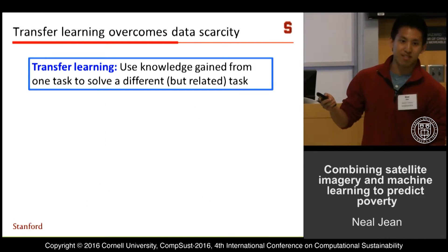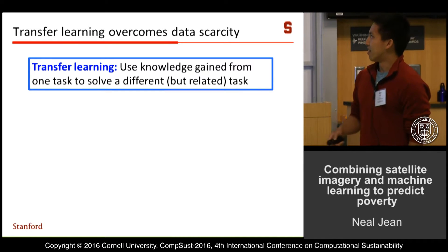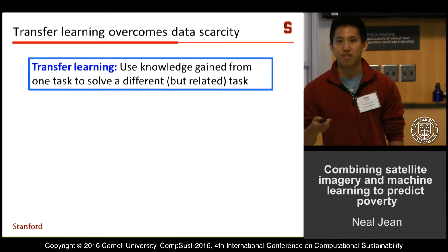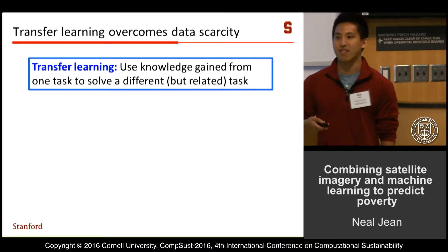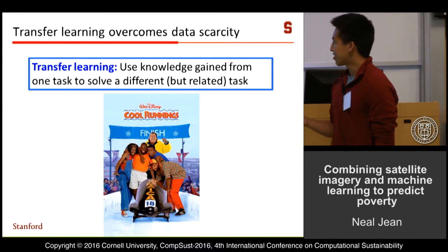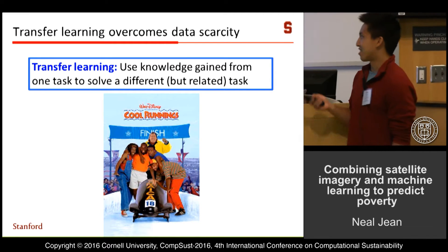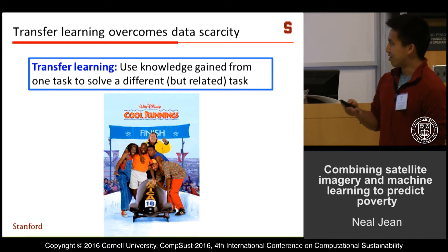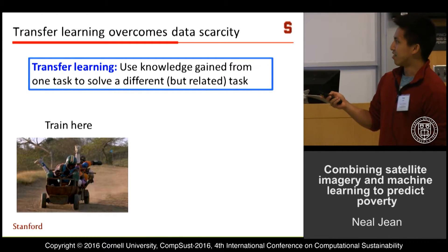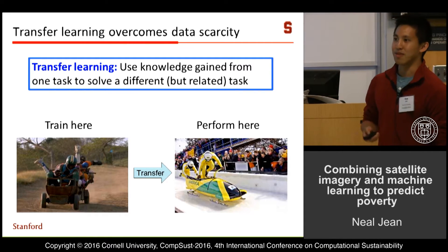The way we're going to get around this data shortage is by using transfer learning. The basic idea is to learn from an easier task — maybe one where you have more training data — and then apply that knowledge to the task you actually care about. For example, there's the Jamaican bobsled team: there's no snow or ice in Jamaica, so they can't practice there. They train on a hill and then apply what they learn to compete in the Olympics on ice.